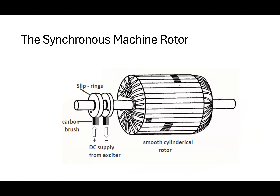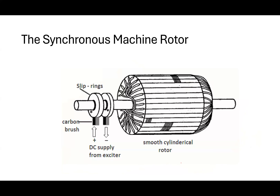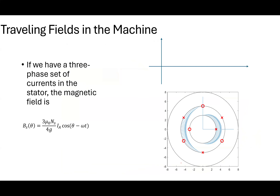Compared to the synchronous machine: the synchronous machine had a field winding and I had to put a current into it using slip rings. The induction motor has no way to do that — there's no mechanism to inject current into the rotor. So somehow I have to be able to make that happen. It's really important to understand the induction machine's operation.